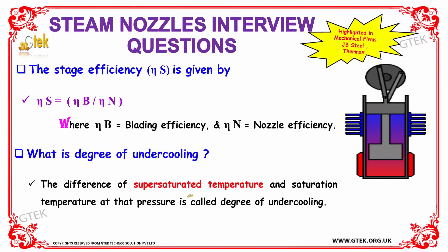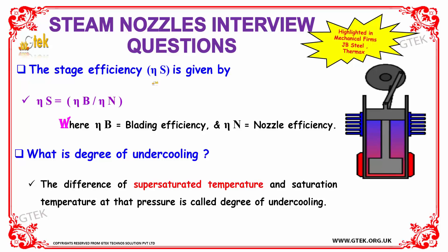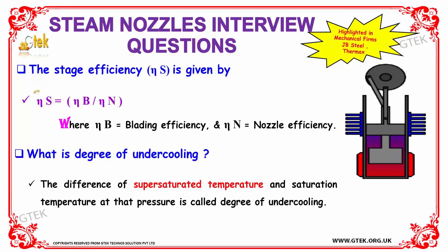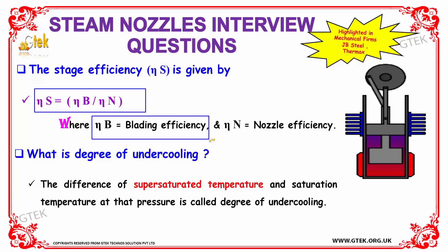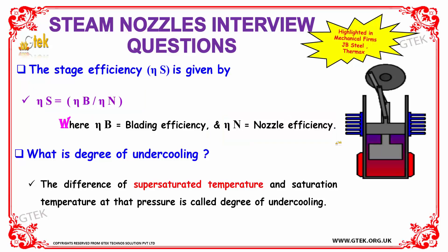The stage efficiency eta_s is given by: eta_s = eta_b divided by eta_n, where eta_b is the blading efficiency and eta_n is the nozzle efficiency.